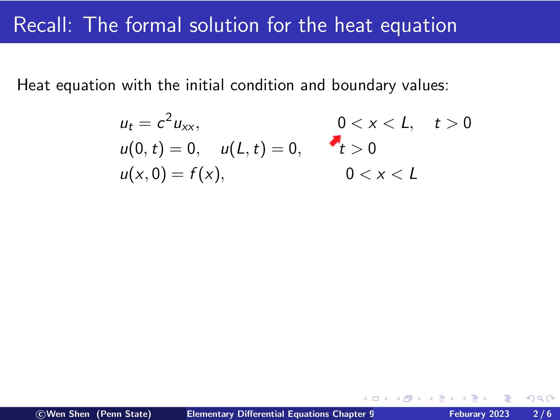We have the heat equation in one space dimension, defined on an interval. And then we have boundary conditions, where the temperature is fixed to zero at the two endpoints. And then we have an initial condition, that's the initial temperature distribution.